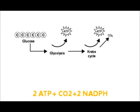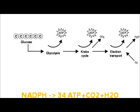The NADPH from the Krebs cycle and glycolysis are used in the electron transport chain to produce another 34 ATP, with byproducts of CO2 and H2O.